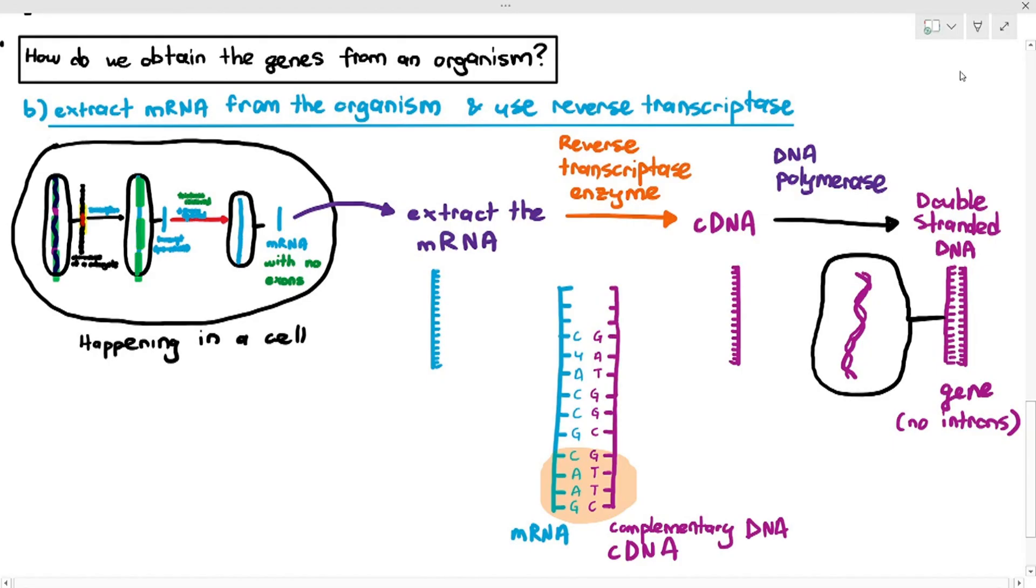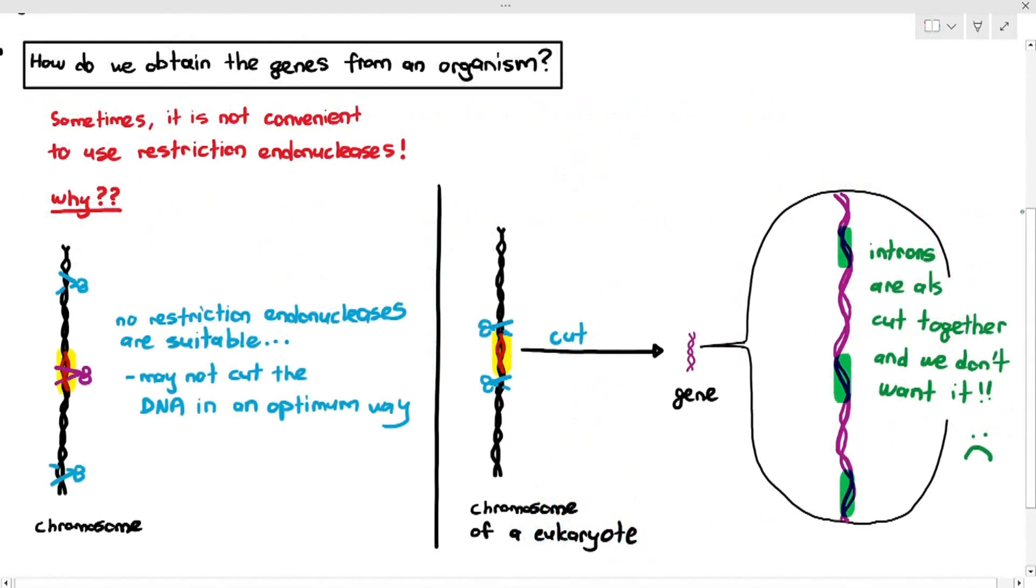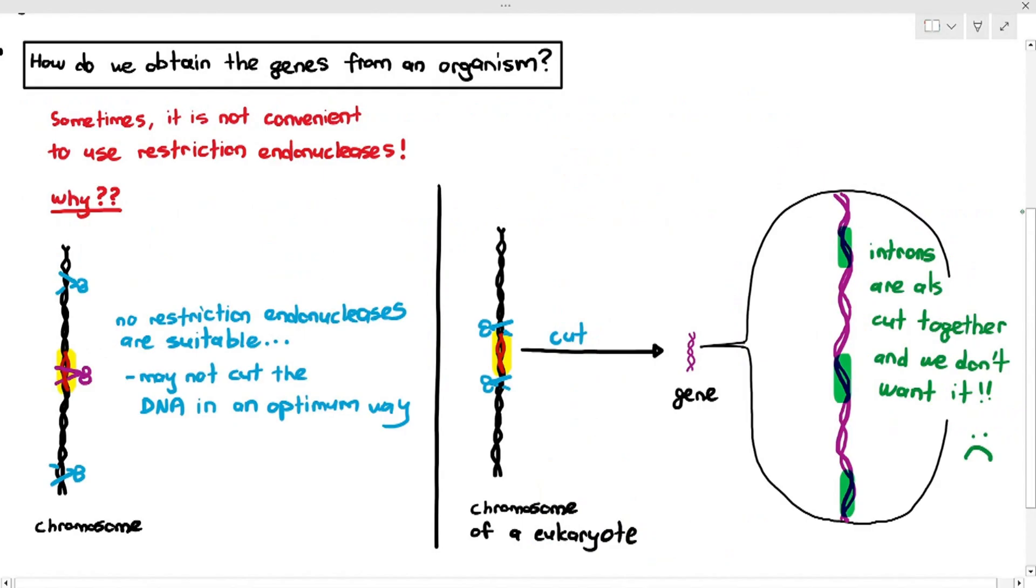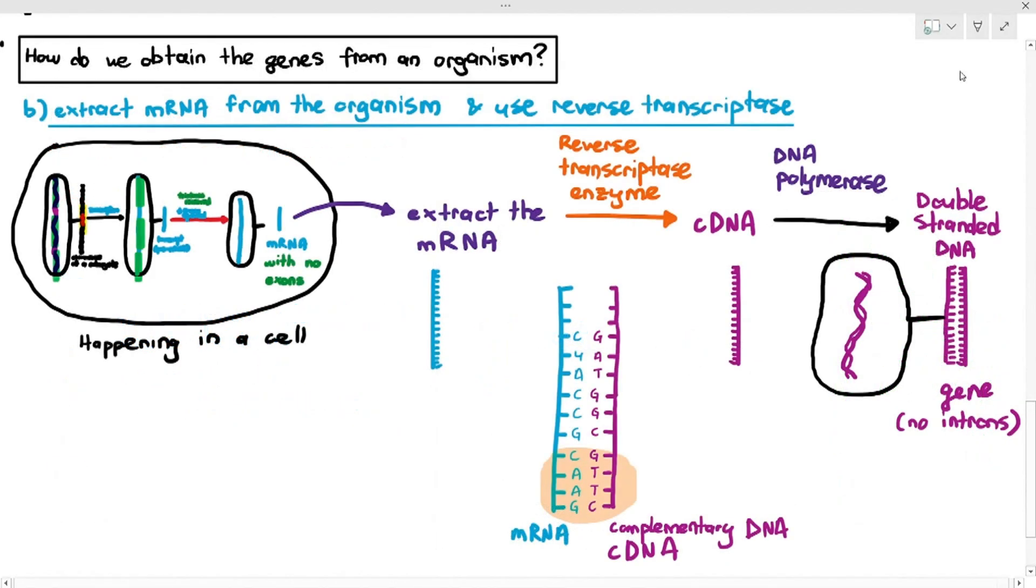So, it's still the same thing. It's still the gene, okay? But this gene over here do not have the introns. So, we have solved the problem. So, in case we cannot cut the DNA using restriction endonuclease, we extract its mRNA and use reverse transcriptase. In both cases, you will still get the gene that you want.